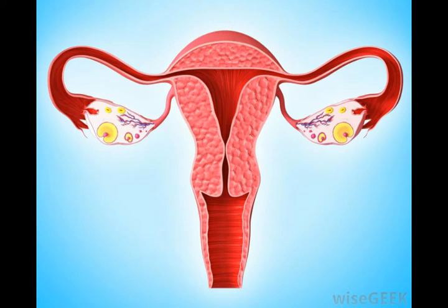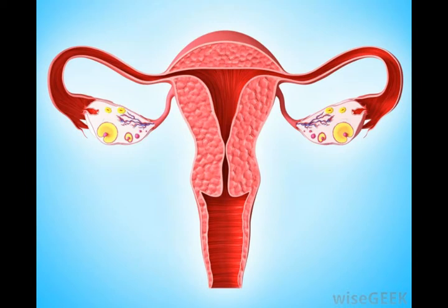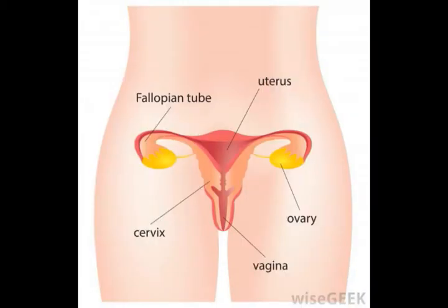Specifically, the follicle emits a form of estrogen known as estradiol. While other tissues in the body can produce low levels of estrogen, egg follicles regulated by FSH are responsible for the major levels of estrogen production in the female body. During the first 14 days of the 28-day menstrual cycle, levels of estrogen and FSH are at their highest as the follicle develops over several days.